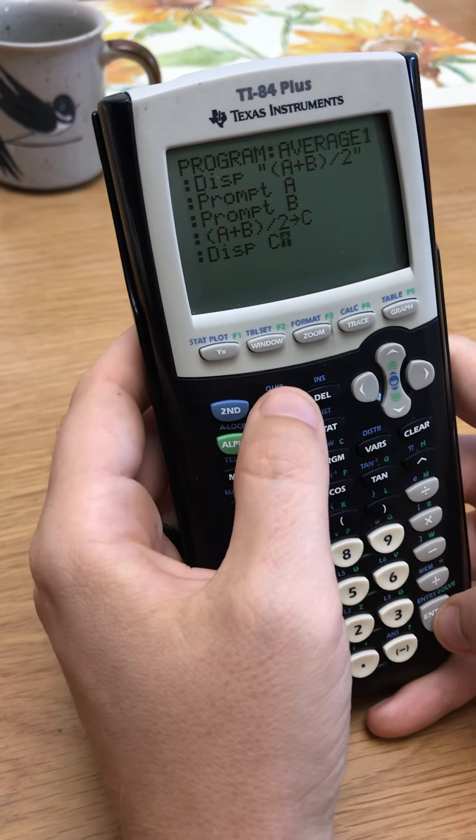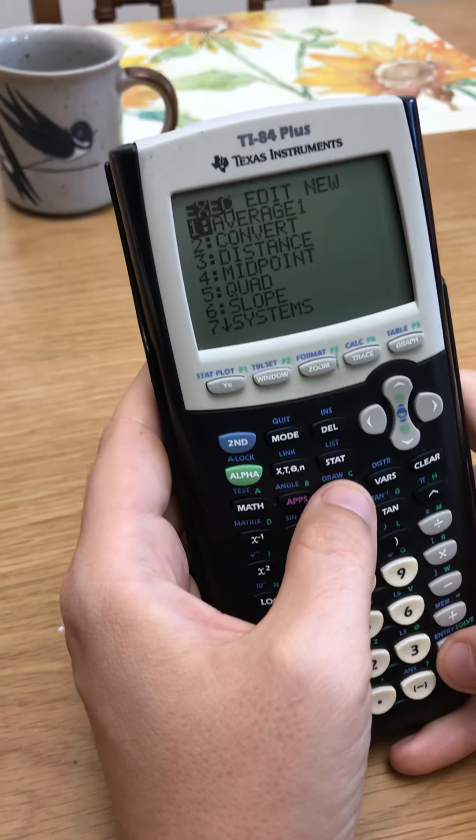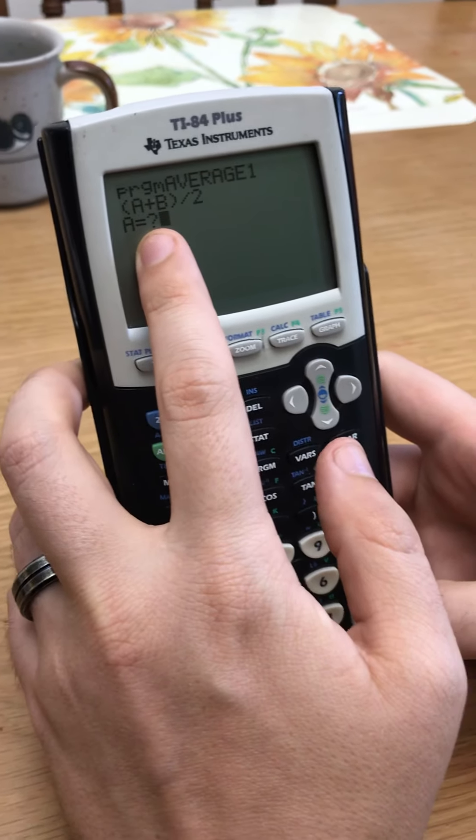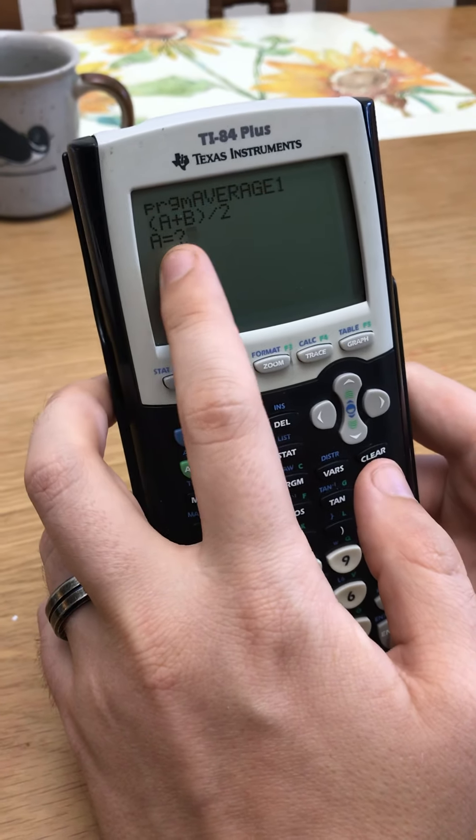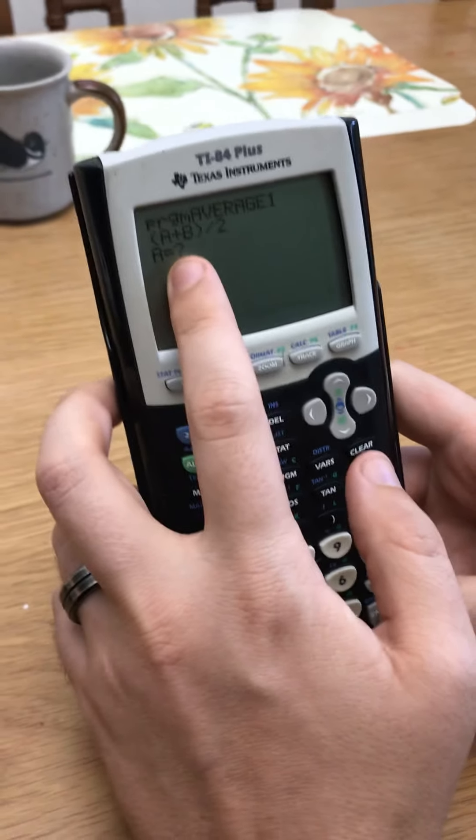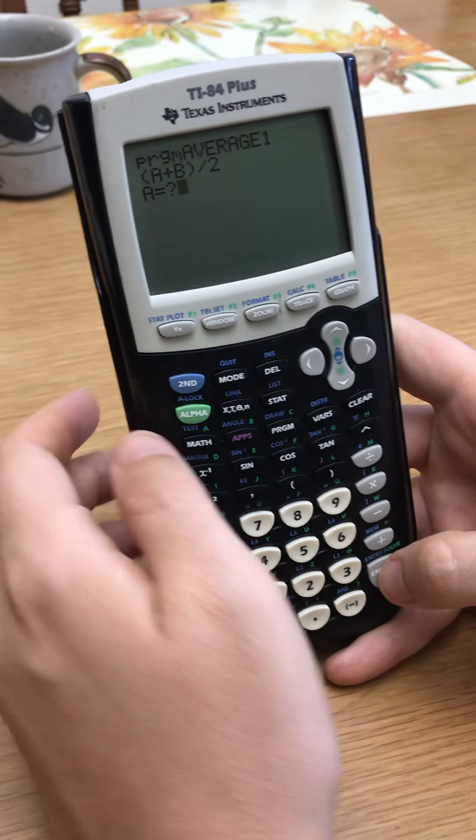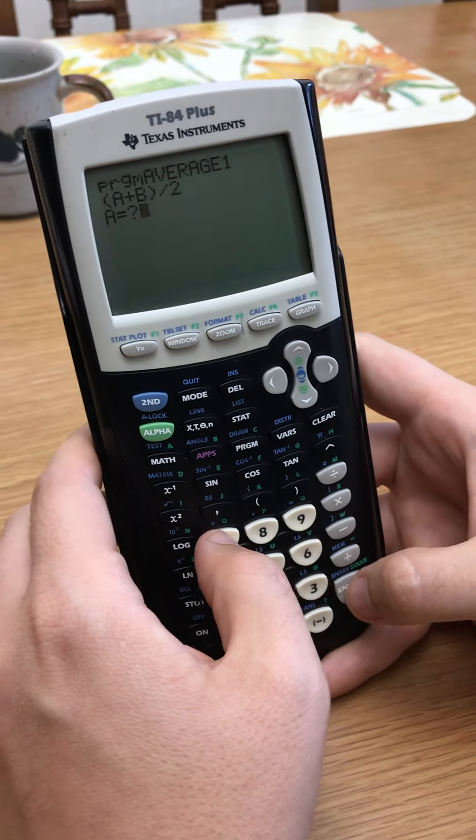So second, quit. Get out of there. Program, execute. All right. So there it is. Average one. Boom. And now notice it puts a little question mark here. So when you prompt, instead of do the other one, the input, it does this, and you can't really control that. It does that if you do prompt. That's just the default thing. So that's what it'll look like if you prompt. If you're okay with that, go for it. If you want it to look really nice, then you could do the input instead.